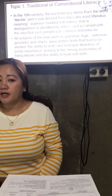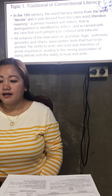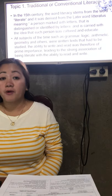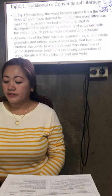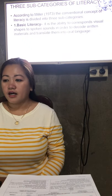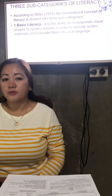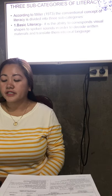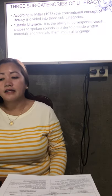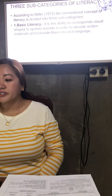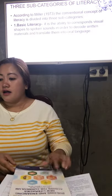All subjects of the time — such as grammar, logic, arithmetic, geometry, and others — were written texts that had to be studied. The ability to write and read was therefore of prime importance, leading to the strong association of being literate with the ability to read and write. There are three subcategories of literacy. According to Miller (1973), the conventional concept of literacy is divided into three subcategories. Number one is basic literacy — it is the ability to correspond visual shapes to spoken sounds in order to decode written materials and translate them into oral language.